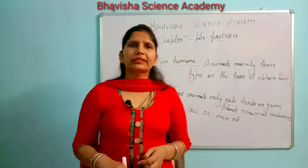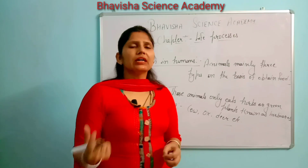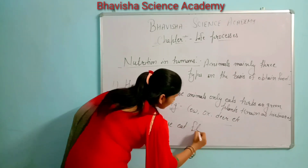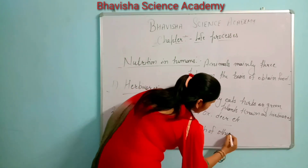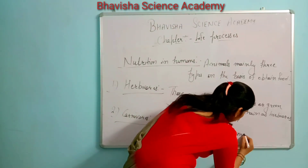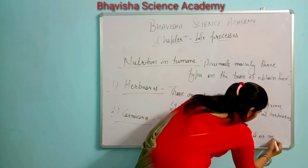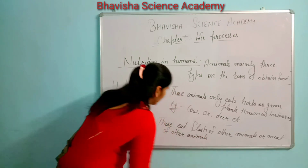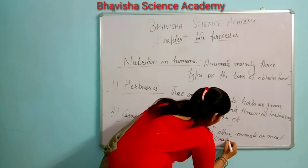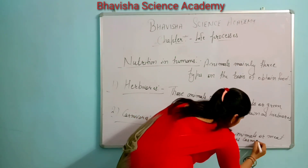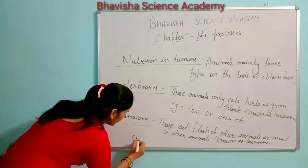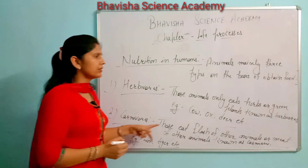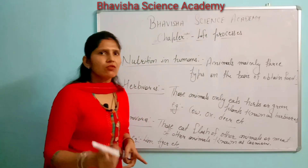The next type is Carnivores. Those that eat the flesh or meat of other animals are known as carnivores. For example, lion, tiger, etc. These animals eat the meat of other animals, that's why they are known as carnivores.